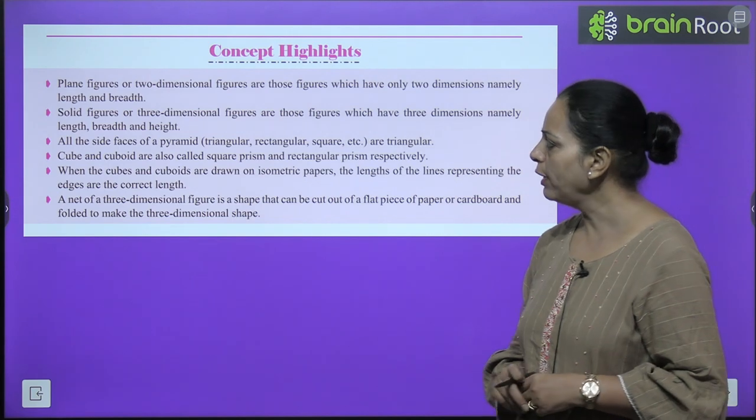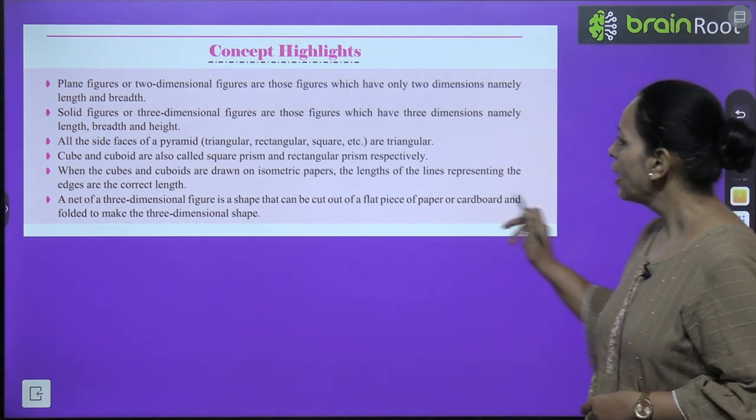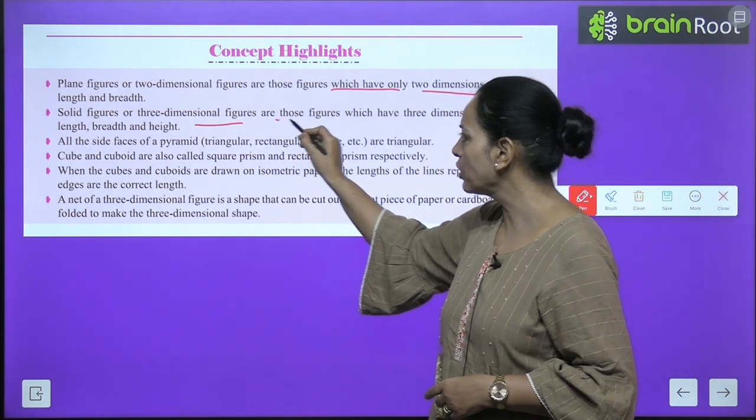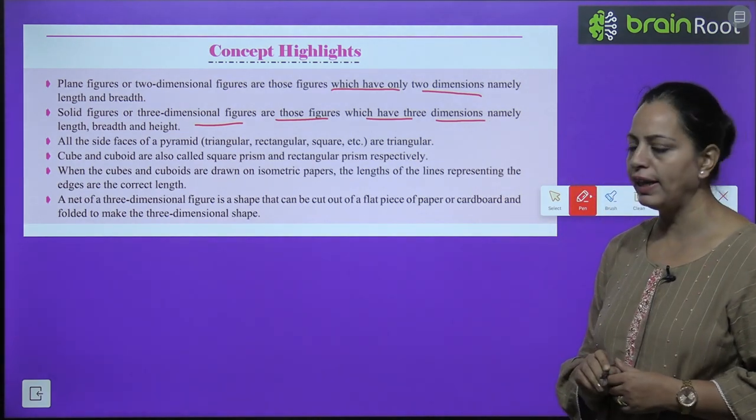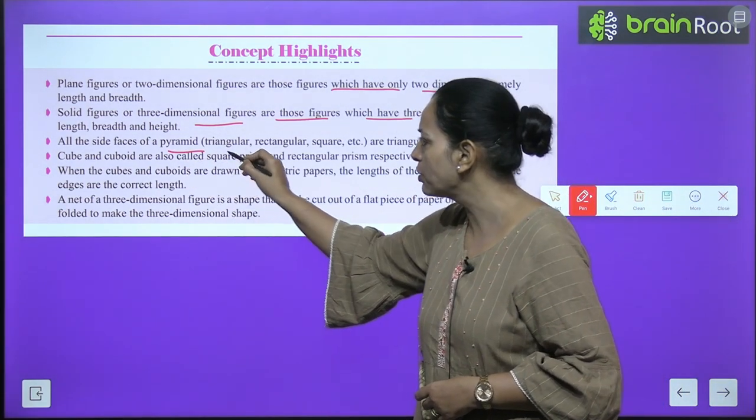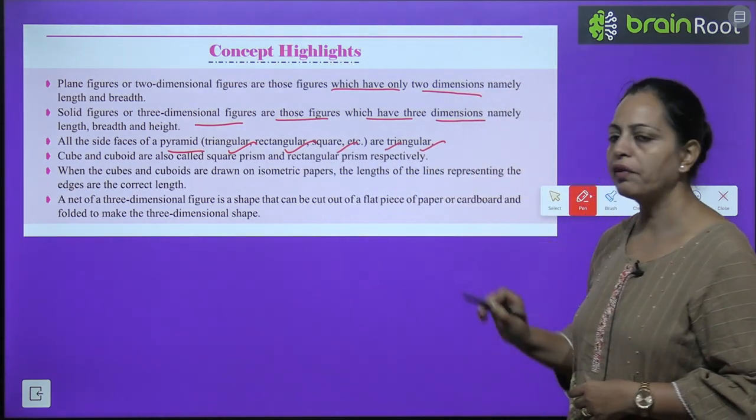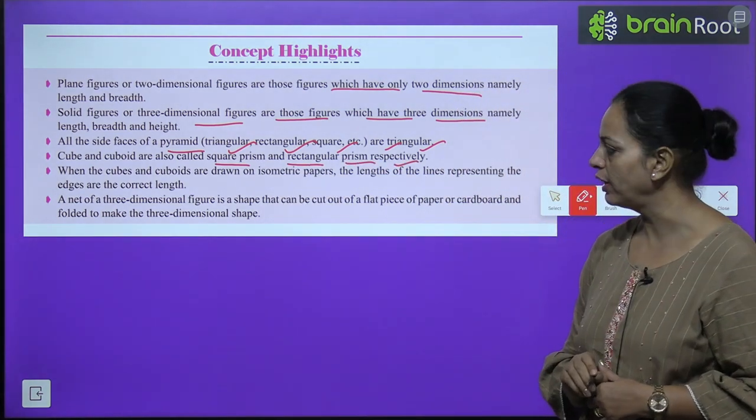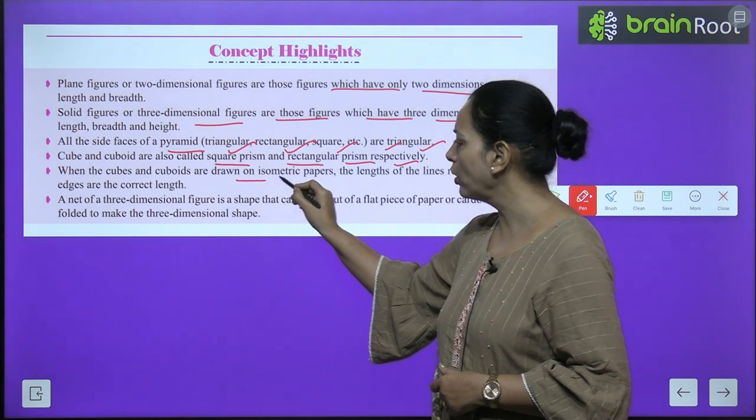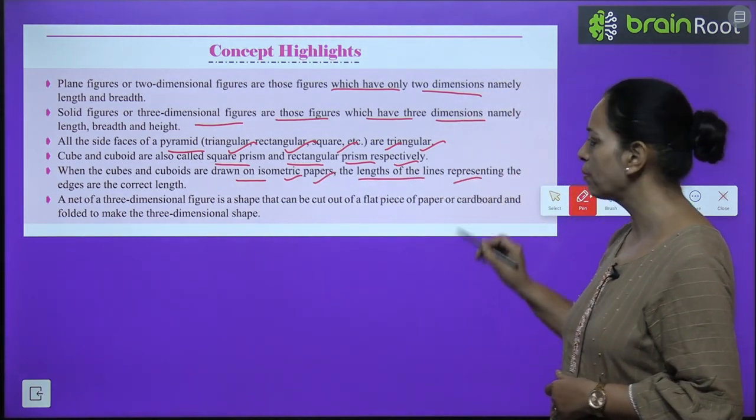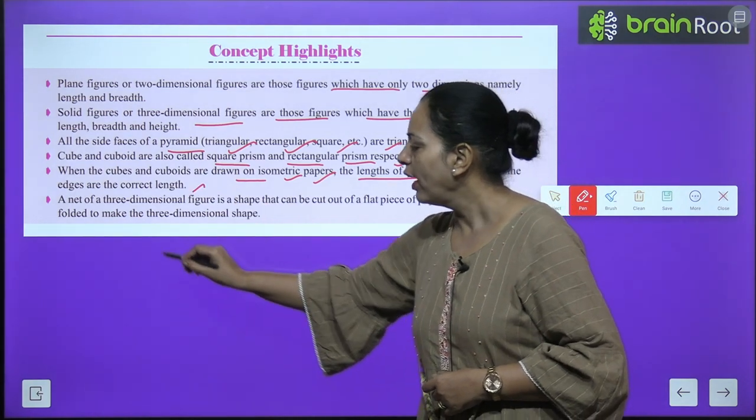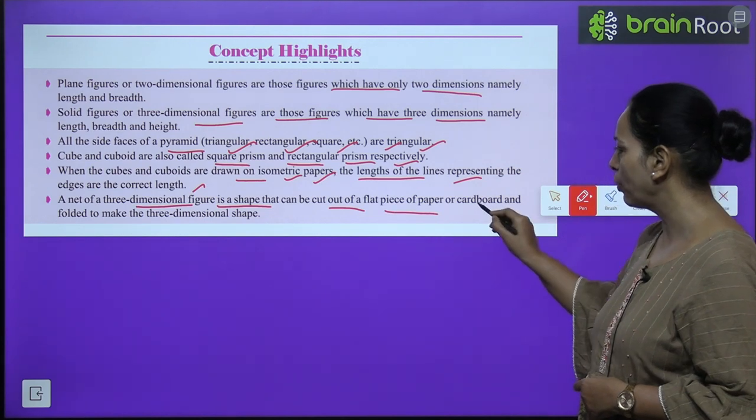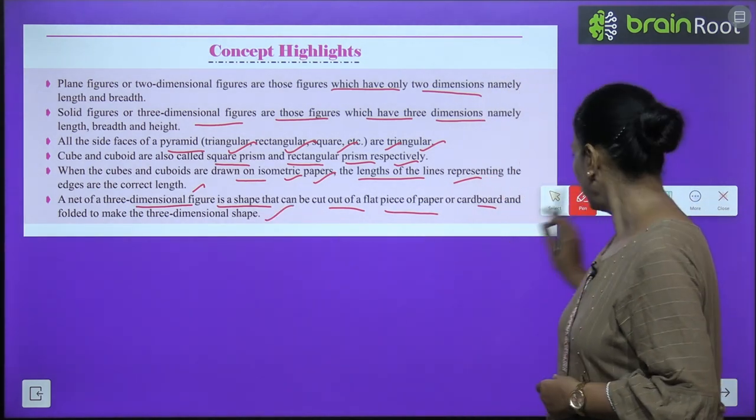Concept Highlights: Plane figures or 2-dimensional figures are those figures which have only 2 dimensions, namely length and breadth. Solid figures or 3-dimensional figures are those which have 3 dimensions: length, breadth, and height. All the side faces of a pyramid are triangular. Cube and cuboid are also called square prism and rectangular prism respectively. When cubes and cuboids are drawn on isometric paper, the length of the lines representing the edges are the correct length. A net of a 3-dimensional figure is a shape that can be cut out of a flat piece of paper or cardboard and folded to make the 3D shape.